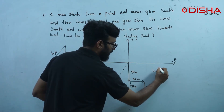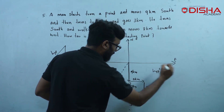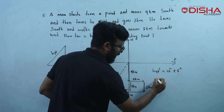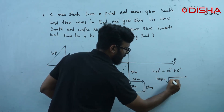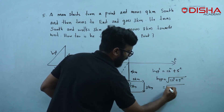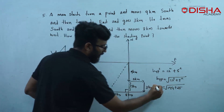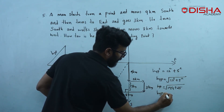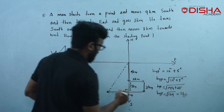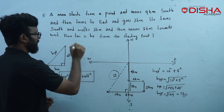We can see hypotenuse squared. The height is 12, the base is 5. Hypotenuse is equal to root of 12 squared. 12 squared is 144 plus 25. Hypotenuse is equal to root of 169, which is 13. That's the distance — the distance is 13.